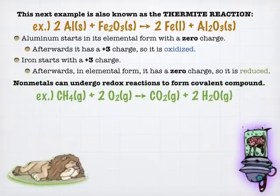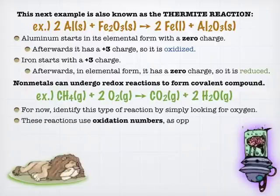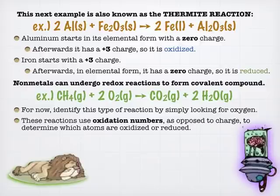Even nonmetals can undergo redox reactions. It's a little trickier to figure this out because you don't have ions involved. But that's where you get into something called oxidation numbers. And again, I don't really do these service in this video. But an oxidation number is,